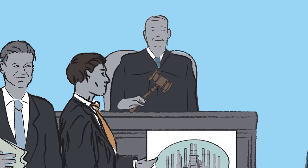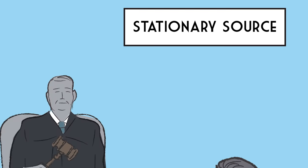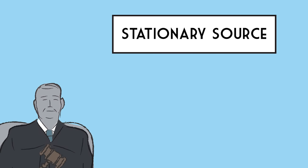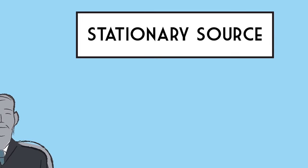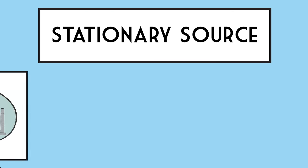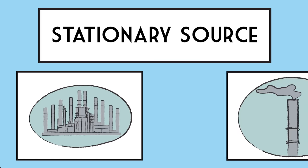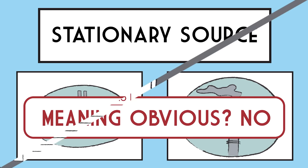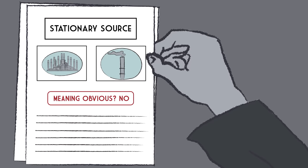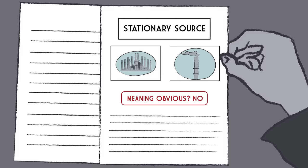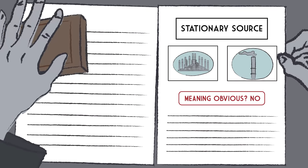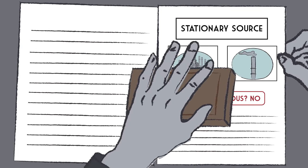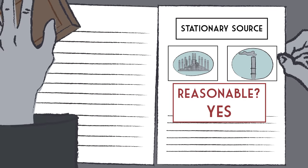The Supreme Court described a two-step inquiry. First, we ask: does the statute clearly resolve this? As we look at the term 'stationary source,' is it obvious that it means either the whole factory or an individual smokestack? No — no answer leaps forward. So that moves us to the second step: is the agency's result here reasonable? Is it so far off the map that we're going to reverse? No, it's fine.